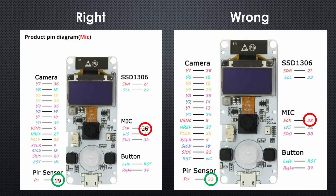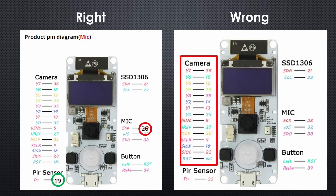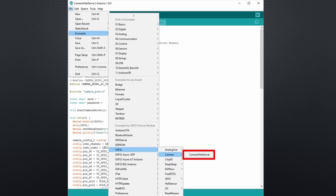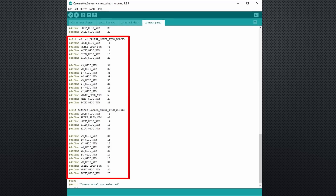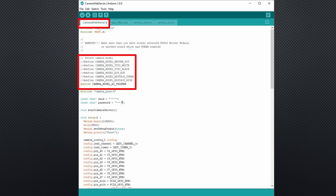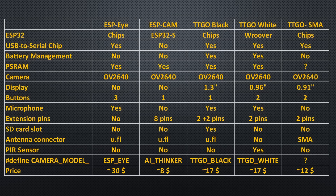Unfortunately, the pinout and reality did not match for the white TTGO — the microphone as well as the PIR sensor pins are wrong on the pinout. I also did not get the camera on this board working; the ESP always crashed, and if I removed the camera it booted. So the chance we do not have the right pin definitions is high. Concerning pin definitions, there is only one sketch available for the Arduino IDE, and here you find the pin definitions for some boards. I added the definitions for the TTGO Black and White; you just have to uncomment the line with your board and the rest is done automatically.